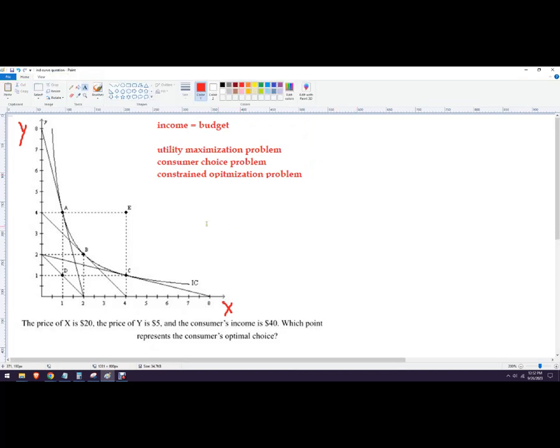We know that the income is forty dollars. What we want to know is which of these points is the optimal choice. There's a rule here that you can follow: it's where the MRS equals the price ratio, so the price of X over the price of Y.